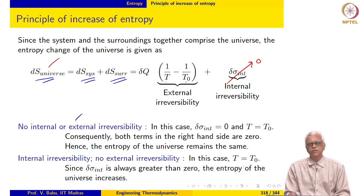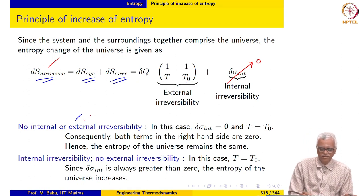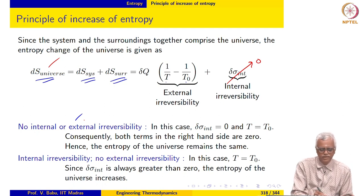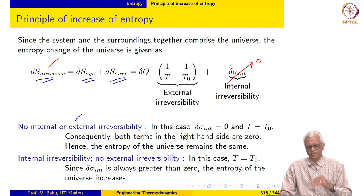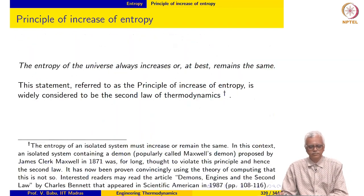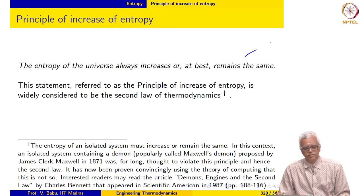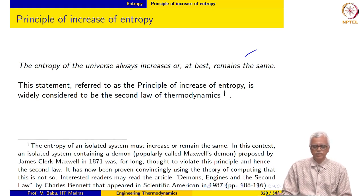This is known as the principle of increase of entropy. The entropy of the universe remains the same at best — that is when there is no internal or external irreversibility, the best possible situation. Otherwise, the entropy of the universe always increases or at best remains the same.